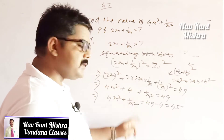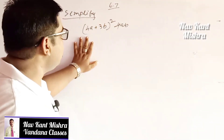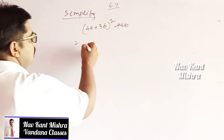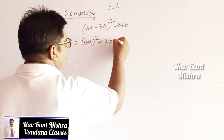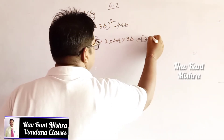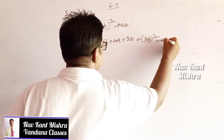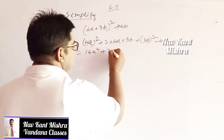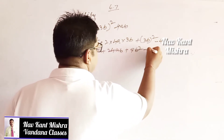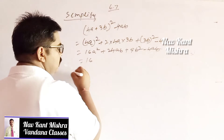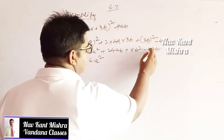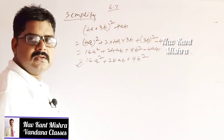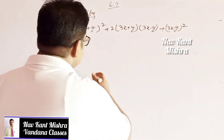That is the value of 4m square plus 1 upon m square. For this next question, it is based on the formula a plus b whole square, so you can write 4a square plus 2 into 4a into 3b plus 3b square, minus 4ab. This gives 16a square plus 24ab plus 9b square minus 4ab, which simplifies to 16a square plus 20ab plus 9b square.